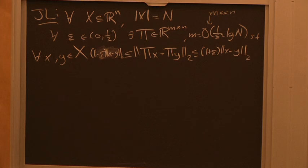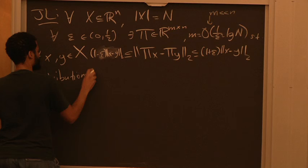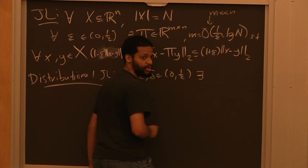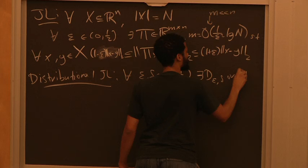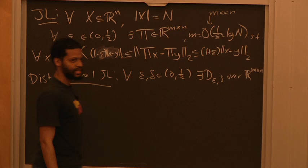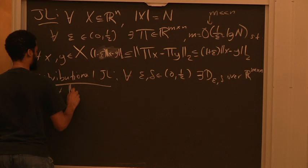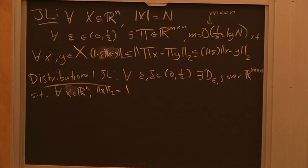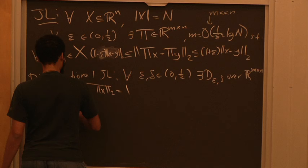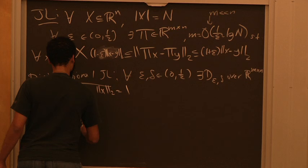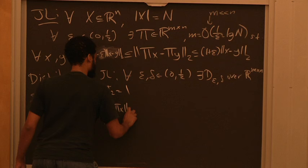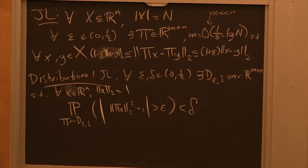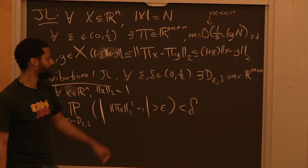We also had distributional JL, which says that for all ε, δ in (0, 1/2), there exists a distribution over matrices such that for all x of unit norm, the probability over π drawn from this distribution that |‖πx‖² − 1| > ε is at most δ. Last time we saw that distributional JL implies JL if you set δ = 1/C(N,2) and union bound over all normalized difference vectors.